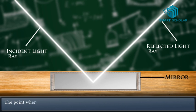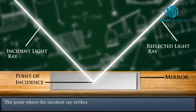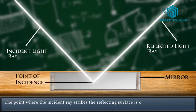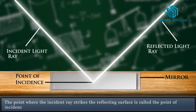The point where the incident ray strikes the reflecting surface is called point of incidence.